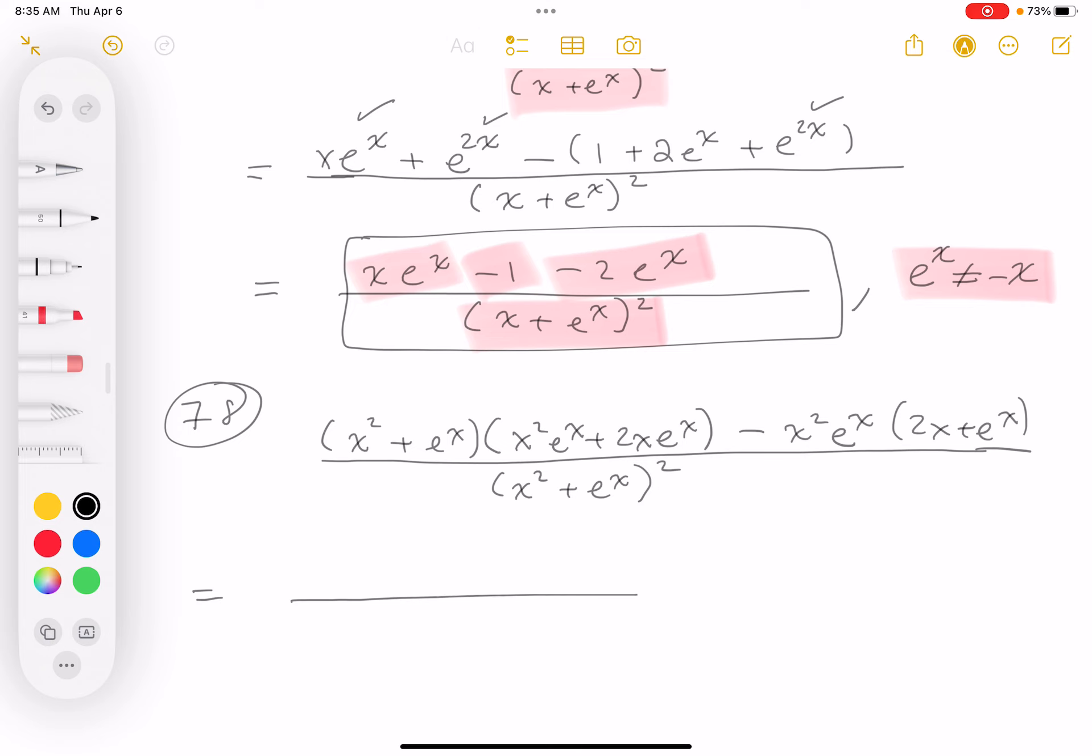So I'm going to start multiplying, and no, I'm not gonna multiply the bottom out, but I'm gonna take this x squared and distribute across those two terms. We're gonna get x to the 4 e to the x plus 2x cubed e to the x.